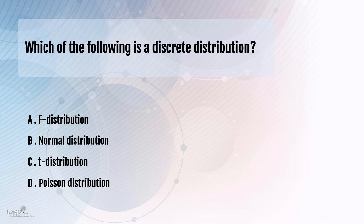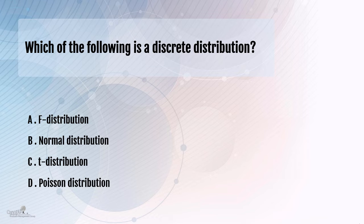I'm sure you know what a normal distribution is. A normal distribution is a scenario where you are using continuous data, and that data falls into the shape of a normal curve which is symmetrical on either side. So normal distribution uses continuous data.